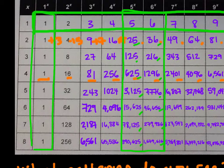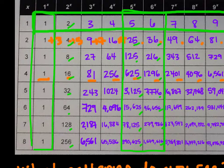For base 2, the ones digits cycle as 2, 4, 8, 6, 2, 4, 8, 6 — I bet that pattern continues. For base 3, the ones digits go 3, 9, 7, 1, repeating. For base 4, they alternate 4, 6, 4, 6. I expect all these patterns to continue.